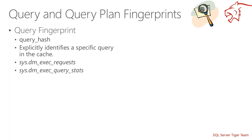I also want to provide a little bit of insight as to how queries relate to query plans. We have this notion of query fingerprint, which is especially useful when you start growing your own scripts or leverage scripts from our GitHub to get a snapshot of what's happening in your system as it relates to queries and their respective query plans. The notion of query fingerprint is actually a query hash — something that explicitly identifies a specific query text within the plan cache. You can use a query hash as a filter in sys.dm_exec_requests and sys.dm_exec_query_stats, which hold performance stats for all queries running in your system, making it useful for point-in-time analysis of a specific query.